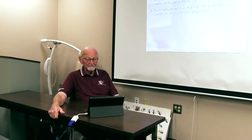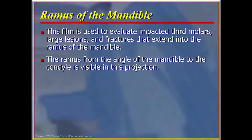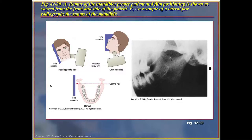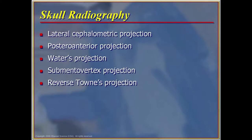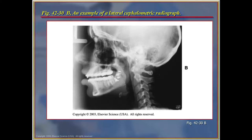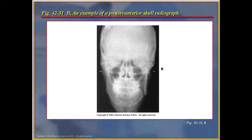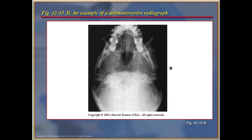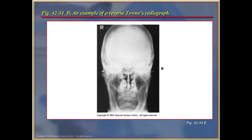The ramus projection is used to evaluate impacted third molars that sometimes do not show on the traditional panoramic. This lateral film shows the ramus from the angle of the mandible to the condyle. Many different types of skull radiography exist, but these are not standard in most general dental procedures. The lateral cephalometric projection is used routinely in orthodontic cases as a diagnostic tool for how teeth should be positioned ideally for aesthetics and appropriate function.